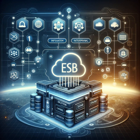Now, let's contrast that with an API Gateway. While an ESB focuses on internal communications, an API Gateway is like the front door to your organization's IT systems for the outside world. It acts as a reverse proxy, routing client requests to the appropriate backend services. It's essential for managing, securing, and analyzing the APIs that connect your services to external clients.